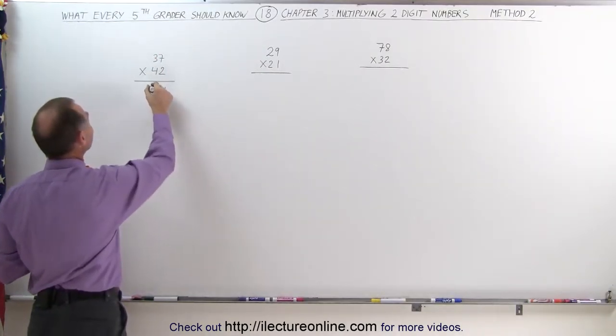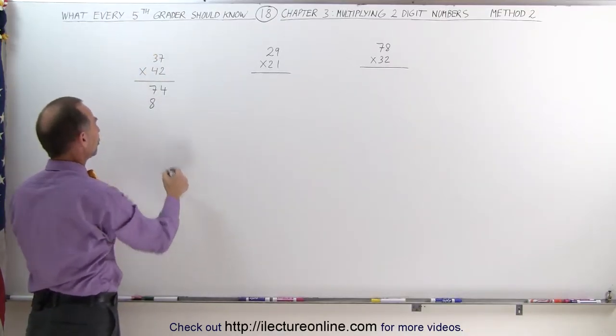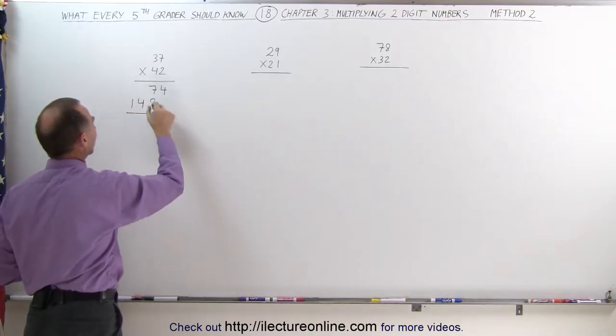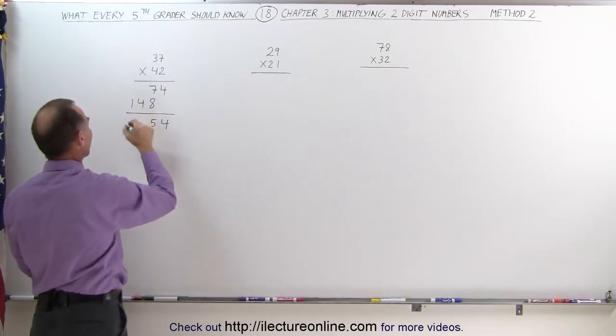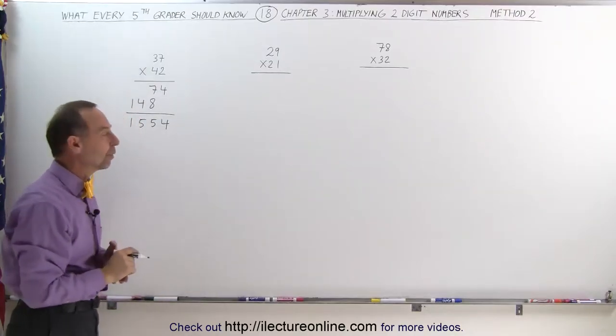4 times 7 is 28, that gives me an 8, I remember 2, that's why I put two fingers out. 4 times 3 is 12, plus 2 is 14. I can add all that together, I get 4, 7 plus 8 is 15, write down 5, I remember 1, 4 plus 1 is 5, and 1, so the total is 1,554.